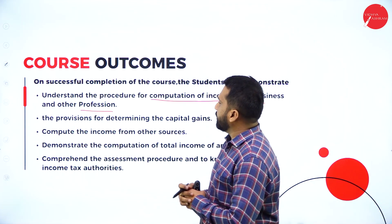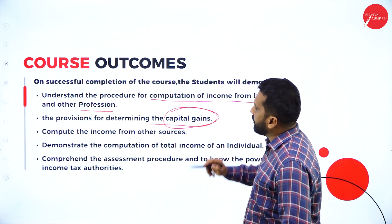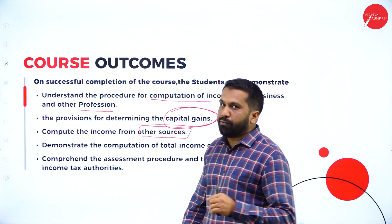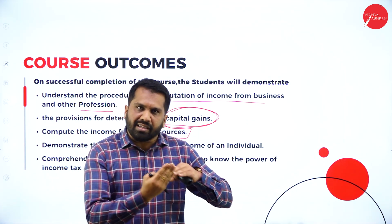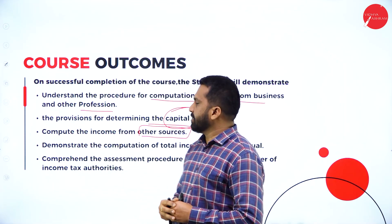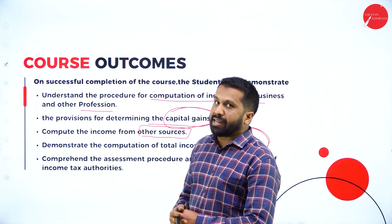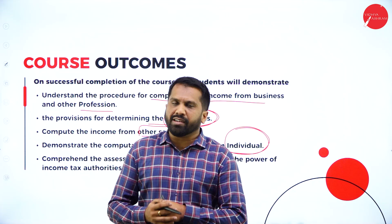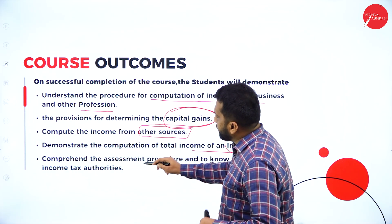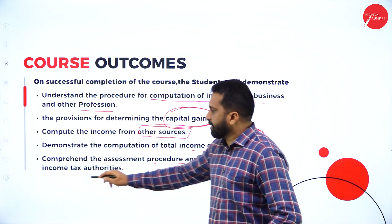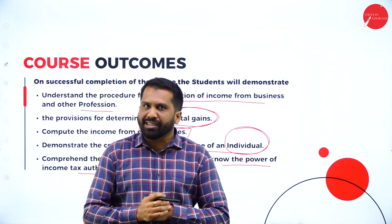We will also cover provisions for determining capital gain. Other than the four heads — salary, house property, capital gain, and business or profession — whatever remaining income is there will come under income from other sources. We will also demonstrate how to compute the total income of an individual and calculate the tax. Additionally, we will learn about the powers of income tax authorities, just like how every institution has its own authority — a principal in a college, a dean in a hospital, a headmaster in a school.